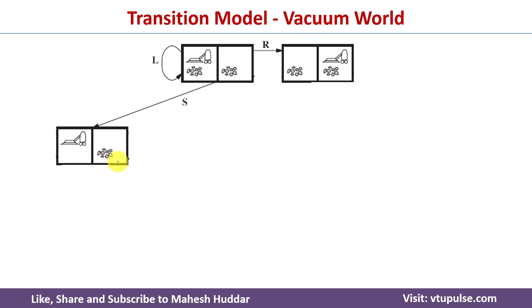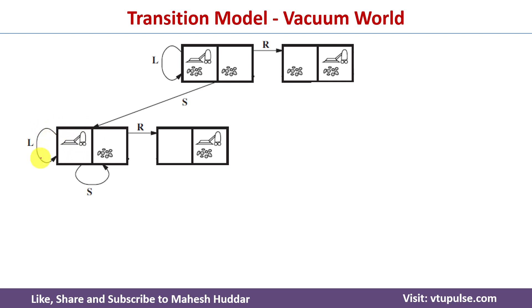Now we start with this new state. At this particular state again we can apply three possible actions. When we apply the Left action, the state remains the same because the AI agent is already in the left location. When we apply Suck, the state also remains the same because location A is clean. When we perform the Right action, the AI agent moves from location A to location B — this is how the new state will look like.